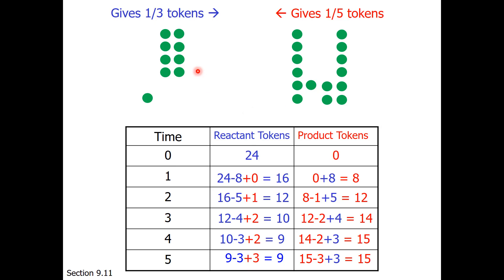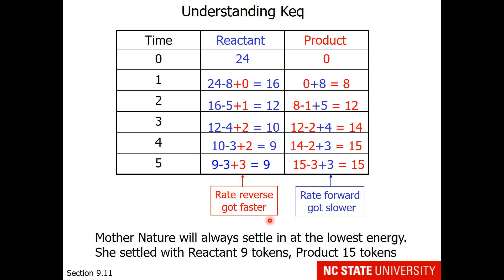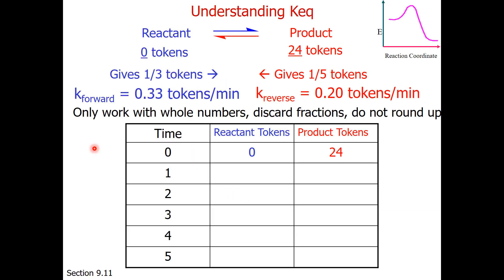It doesn't mean we stop the exchange at equilibrium — it means the exchange rate is equal so that the concentrations do not change. The forward rate started out high and slowed down; the reverse rate started low and sped up until they were equal. This is Mother Nature's lowest energy state: 9 tokens on the reactant side and 15 on the product side. What would happen if we started on the other side with 24 product tokens and no reactant tokens, using the same rate constants?